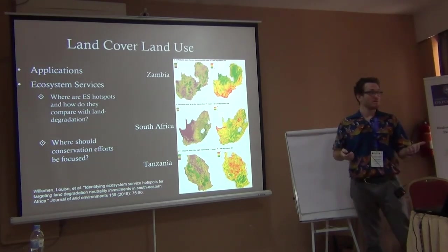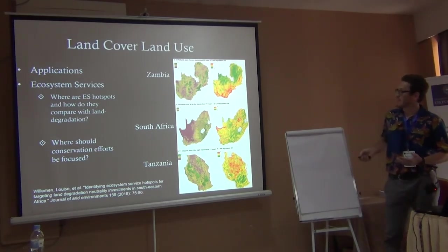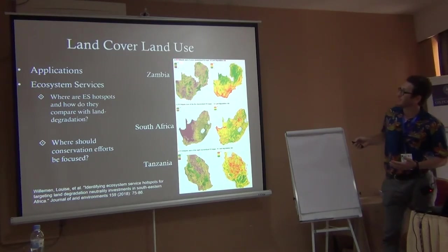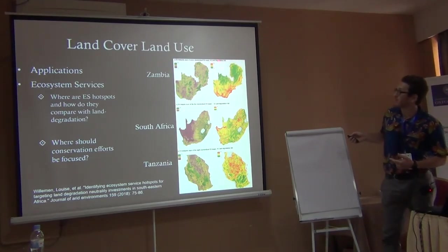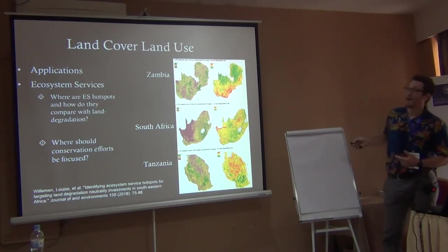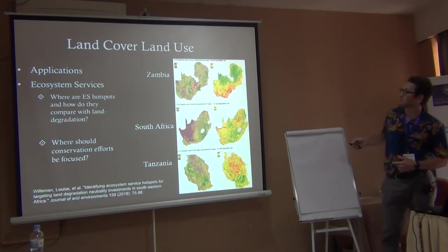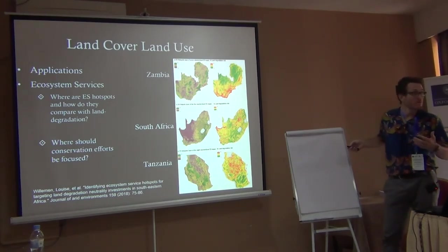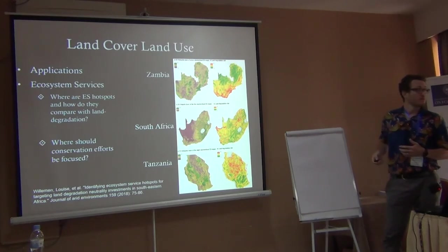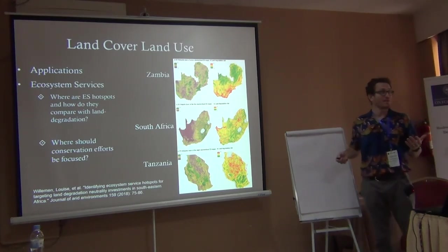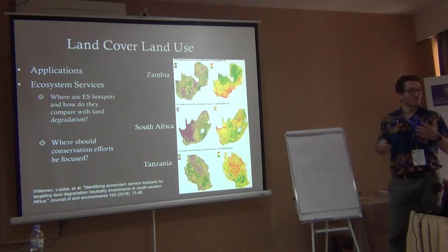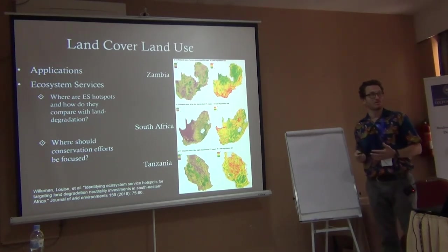For ecosystem services in Zambia, South Africa, and Tanzania — on the left is the ecosystem service hotspot with green being high and purple low, and on the right degradation with red being high and green low. Areas with a high level of ecosystem services and high degradation need to be focused on for conservation. This is a great application of land cover — mapping the differences between ecosystem services and land cover changes.